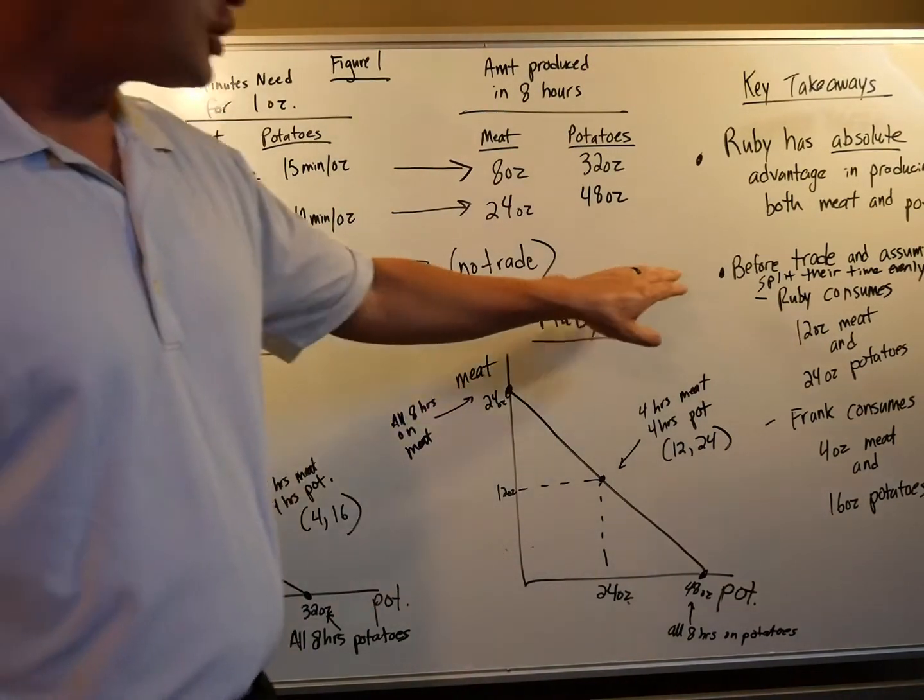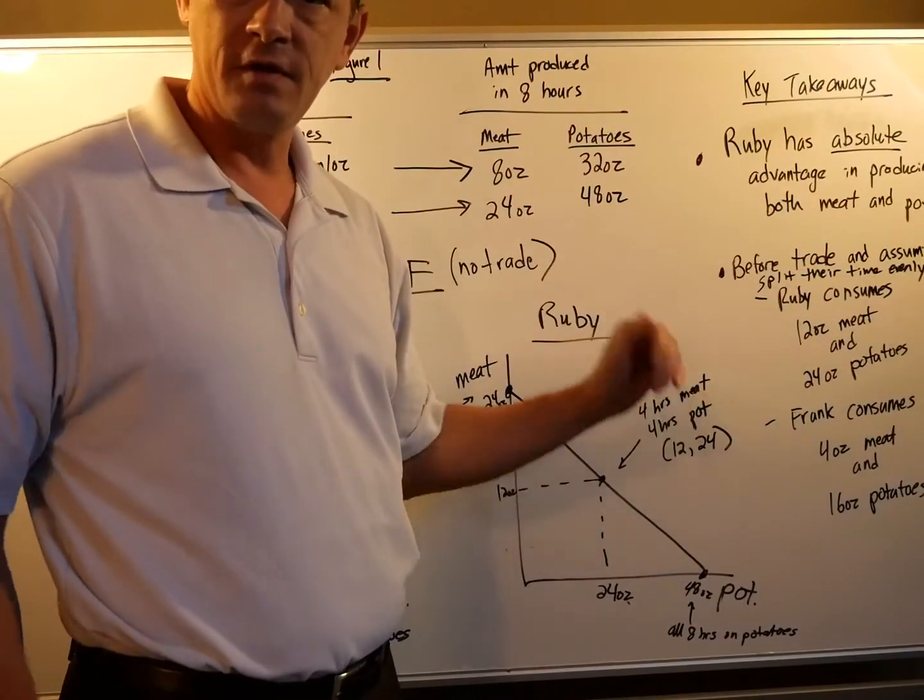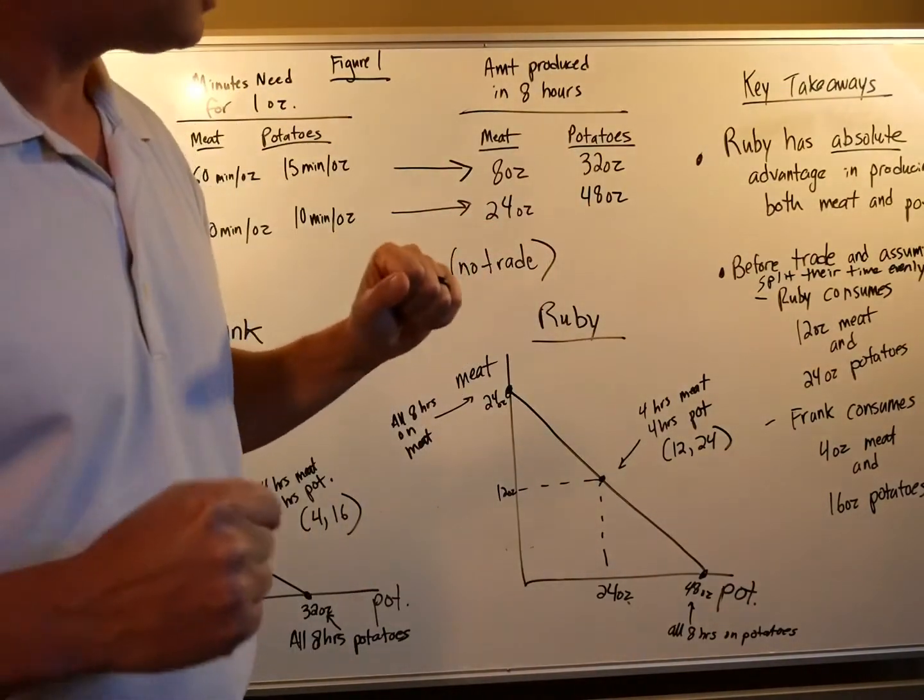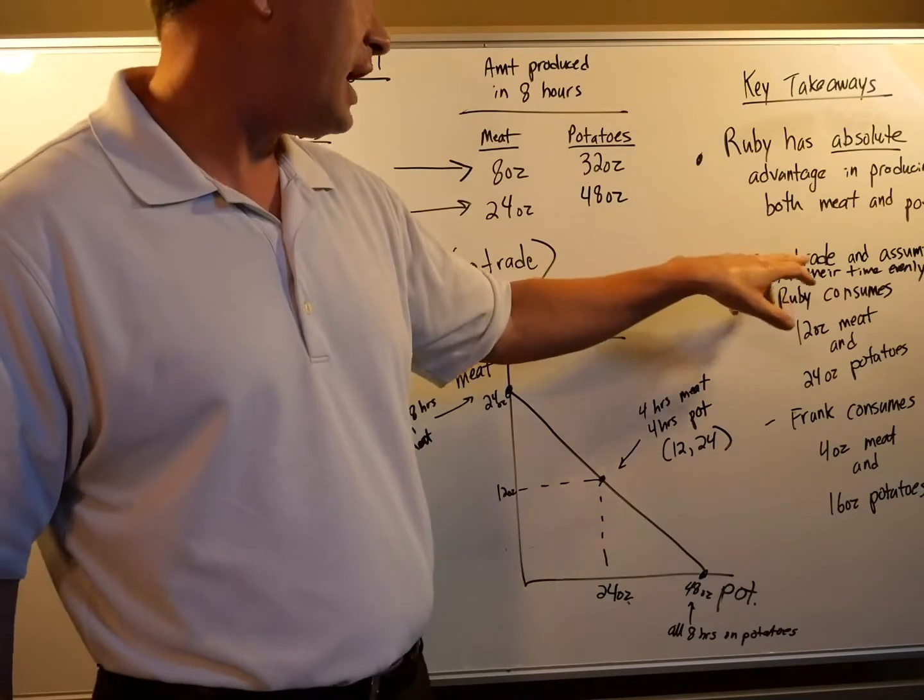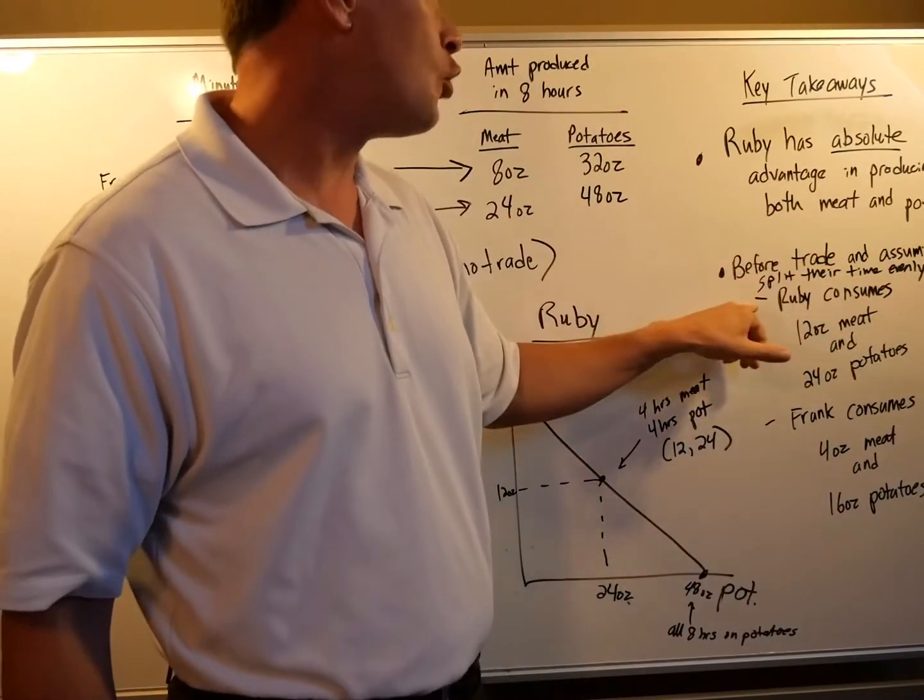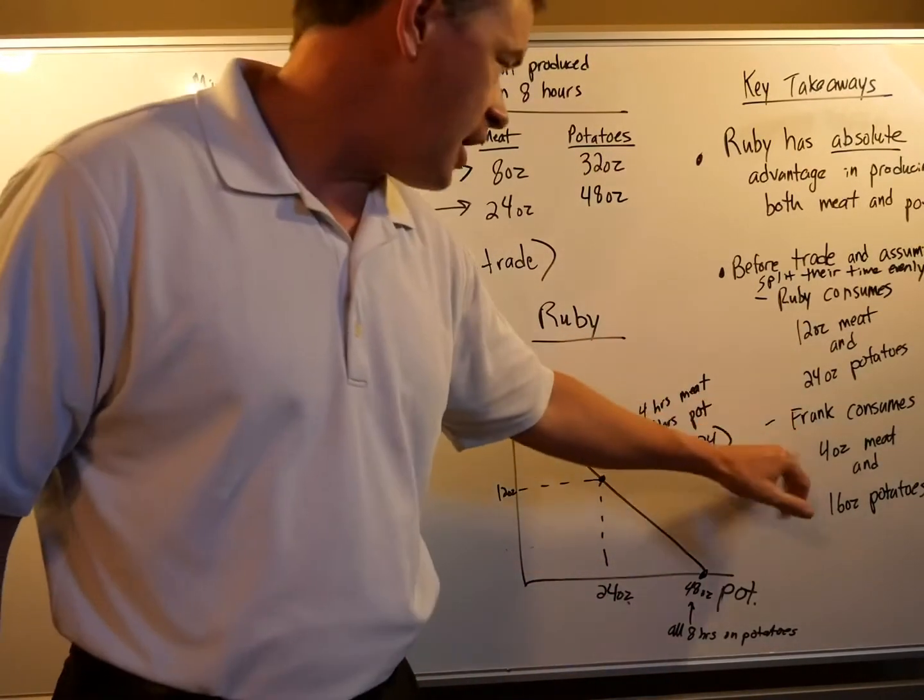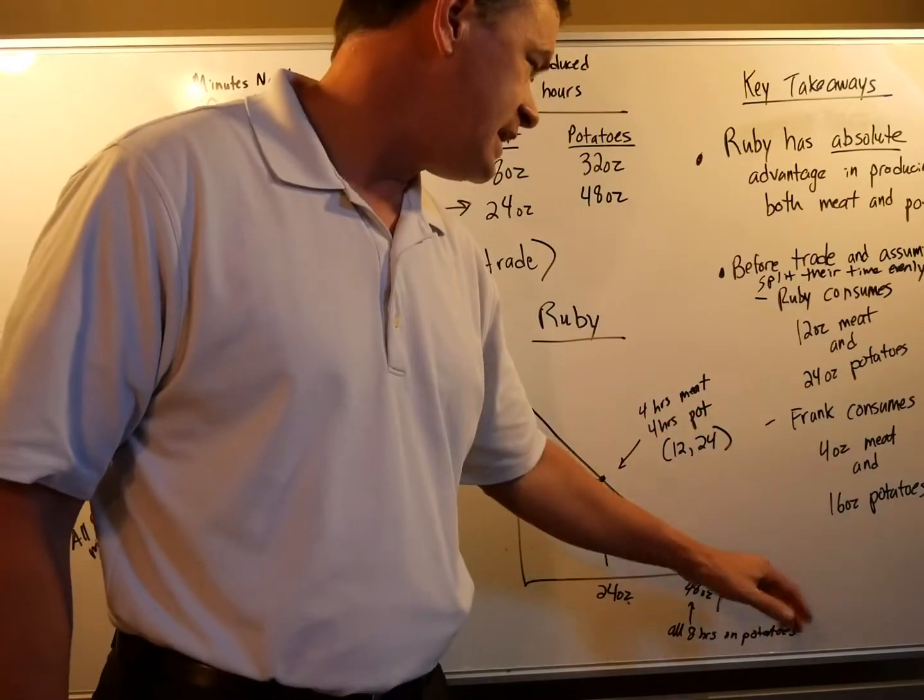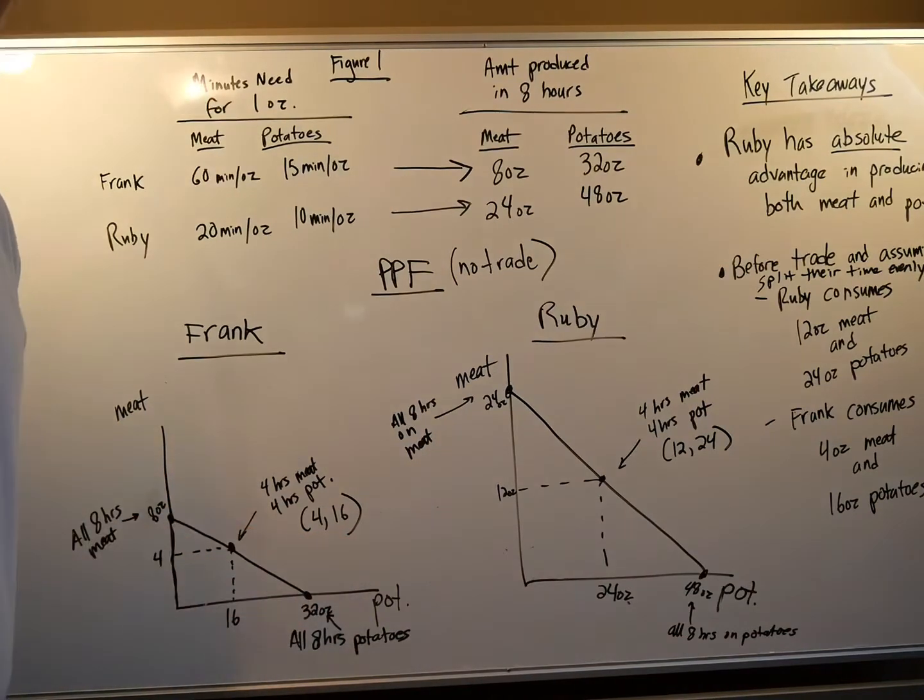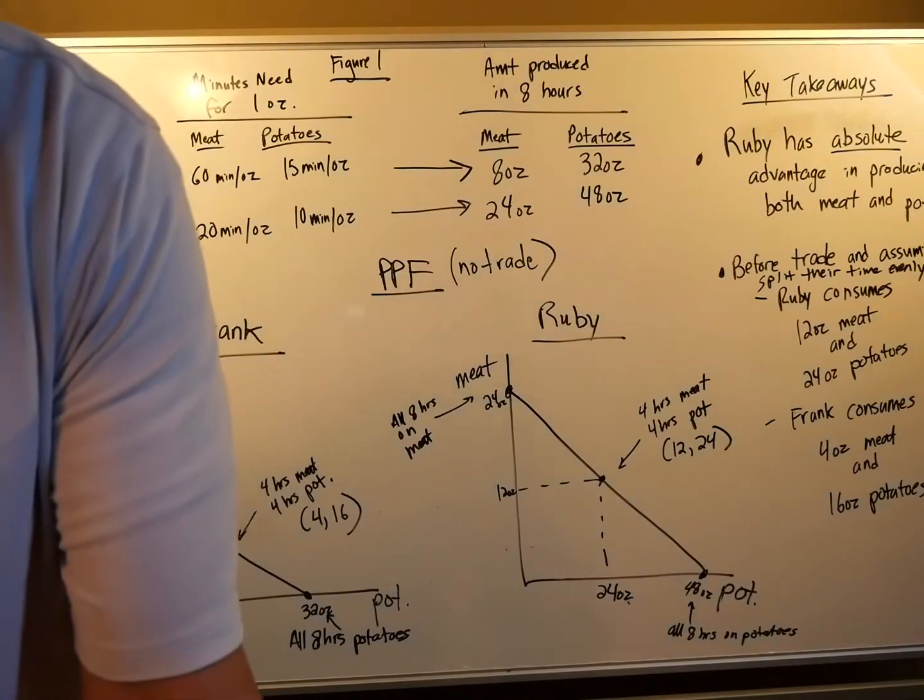There is a cost associated with what you do not produce. So before trade and assuming they split their time evenly, Ruby consumes 12 ounces of meat, 24 ounces of potatoes. Frank consumes 4 ounces of meat and 16 ounces of potatoes. Now, let's set the table for trade. I'm going to read directly from your book. Let's say one day Frank gets a knock on his door and there's Ruby and she's got an idea.